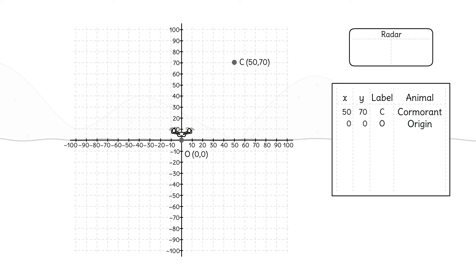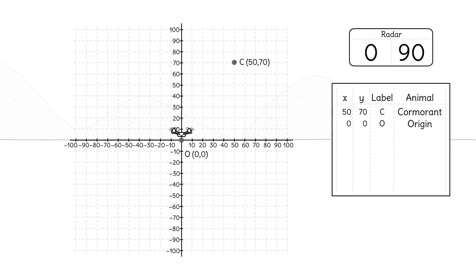Kamal spots movement at another point: (0, 90). What do those coordinates mean? Does the drone need to move horizontally? No. The x-coordinate is 0.